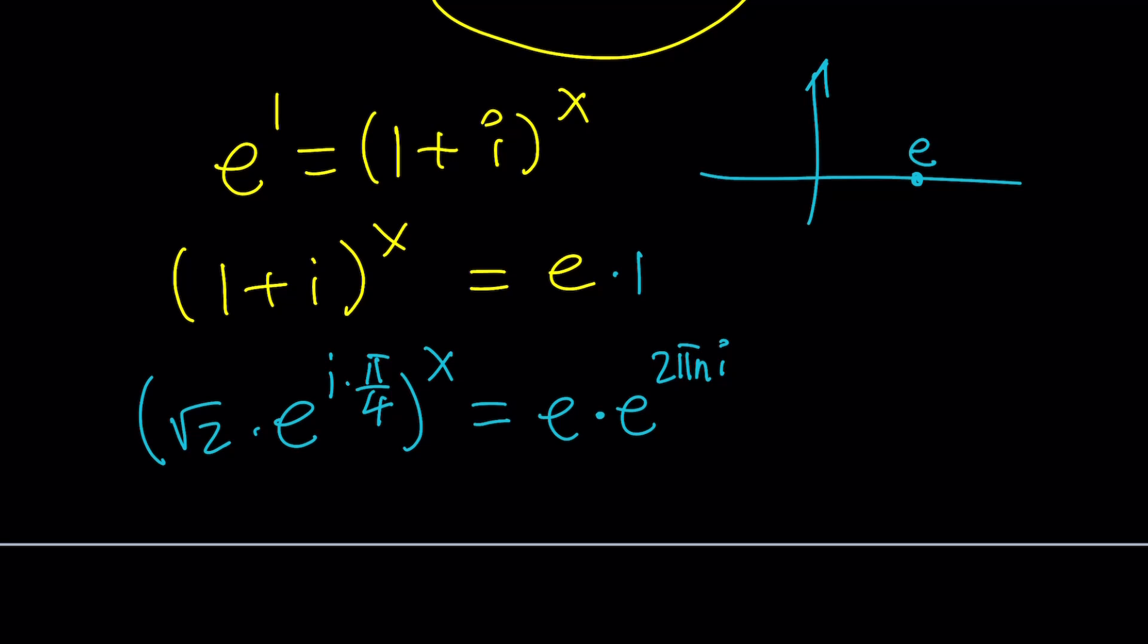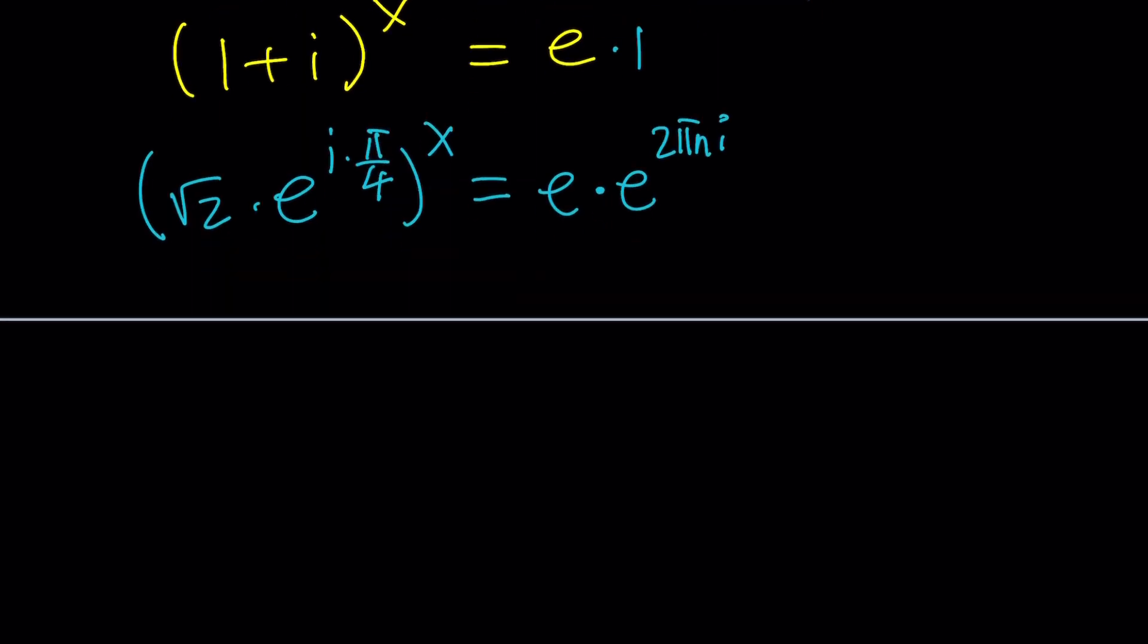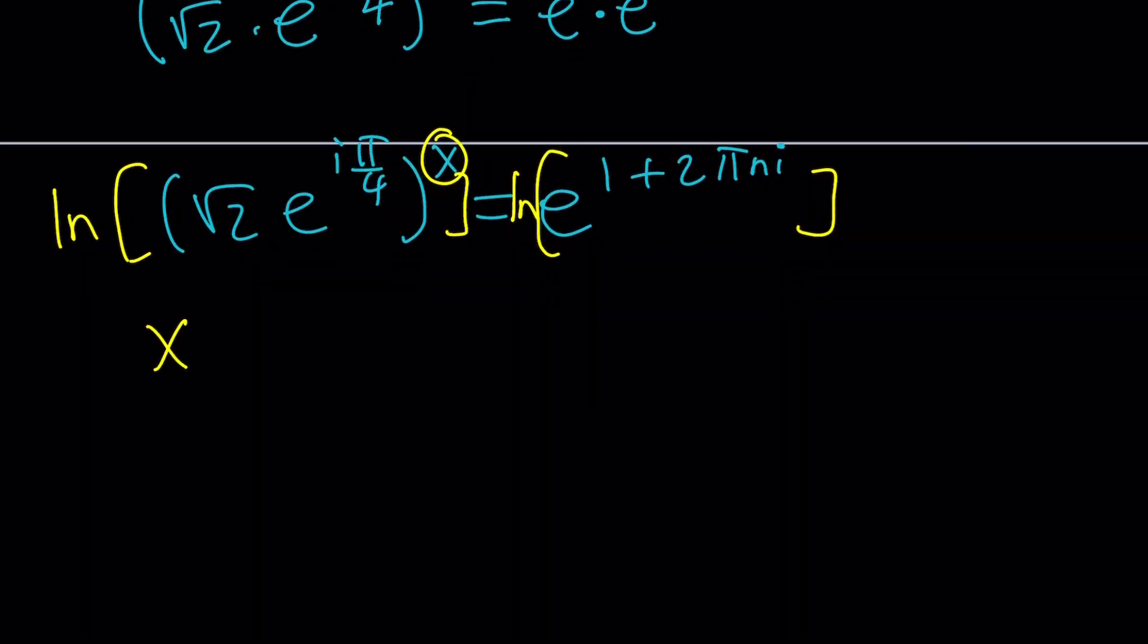Now let's go ahead and simplify this. We didn't have this with the first method. Obviously, this is first power, so we can add the exponents. Don't distribute x yet. We're going to ln both sides. And when you do the natural log, you put an ln here and an ln here. Then this power is going to come all the way to the front: x·ln(√2·e^(iπ/4)) equals ln this. But ln(e^something) is just that power, so it's going to be 1 + 2πni.